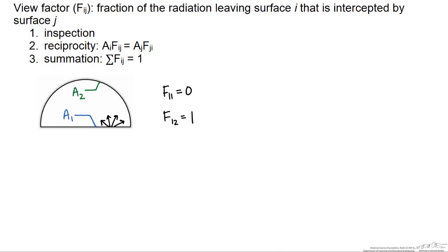Now we use the reciprocity rule to find F two one. A two times F two one equals A one times F one two. So F two one equals A one divided by A two. Or in this case, because F one two equals one, this is just A one divided by A two.